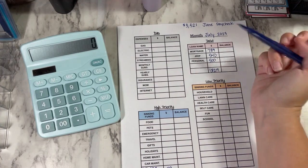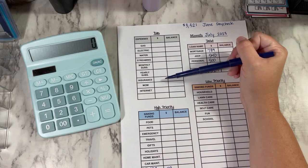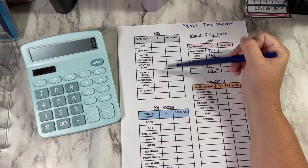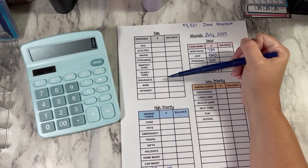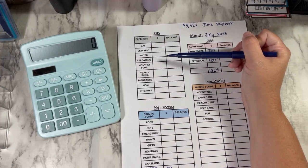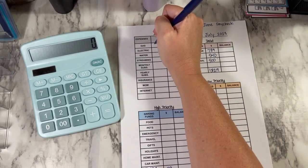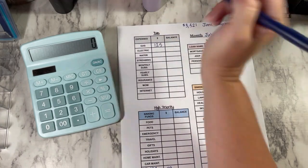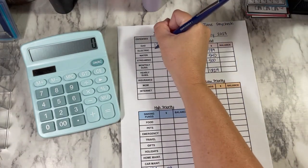So then we're going to go to my bills. And these are things that I know automatically come out every month or that I know I need a specific amount for. So for gas, we're going to do $125. Electric, we're going to do $150.